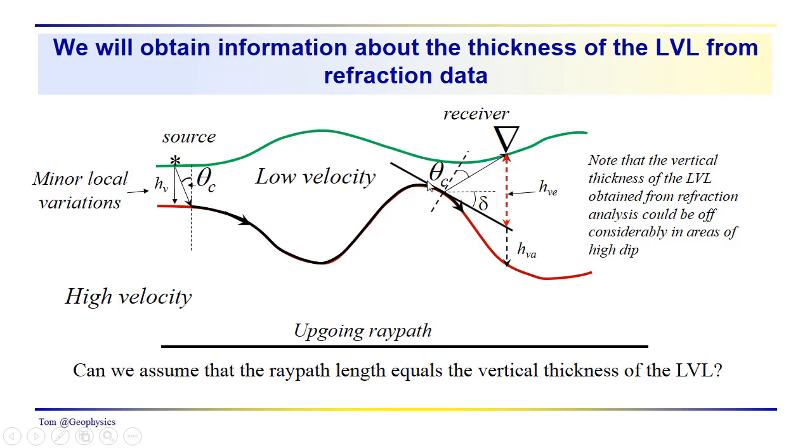Now, if we did that, we'd basically find a thickness, an estimated thickness, which would kind of follow this red arrow here. Whereas the actual thickness, as you can see, is going to be greater. So you can see the potential for errors in the thickness of the low velocity layer that we obtained from refraction data. So our question that we ask ourselves is, whether we can assume that the ray path length equals the vertical thickness of the LVL, and you can see that, in fact, it doesn't.